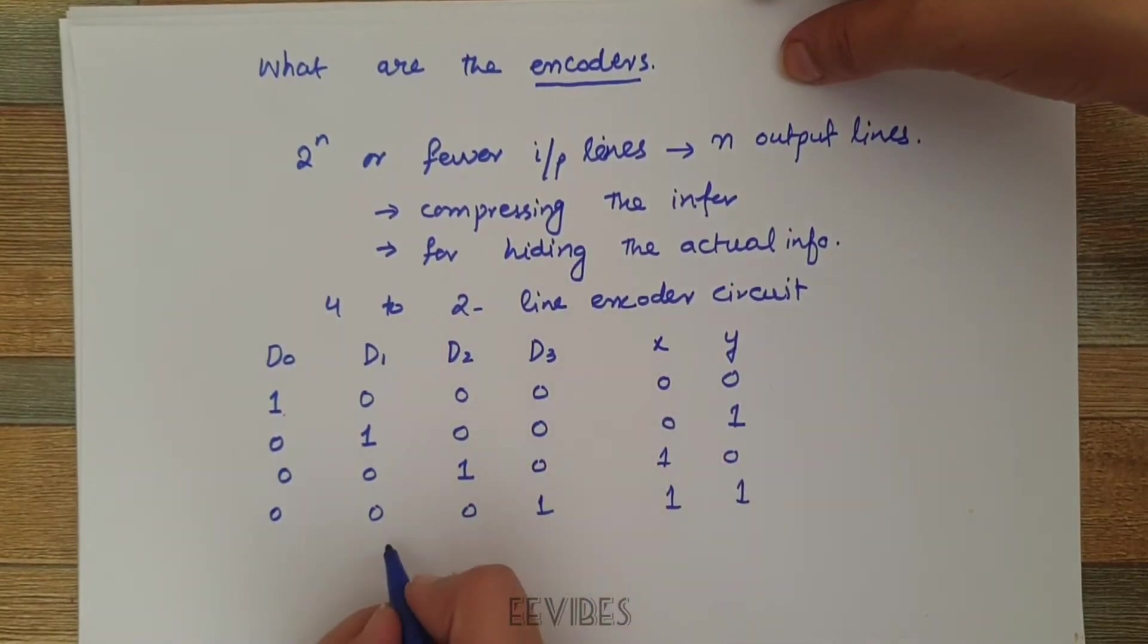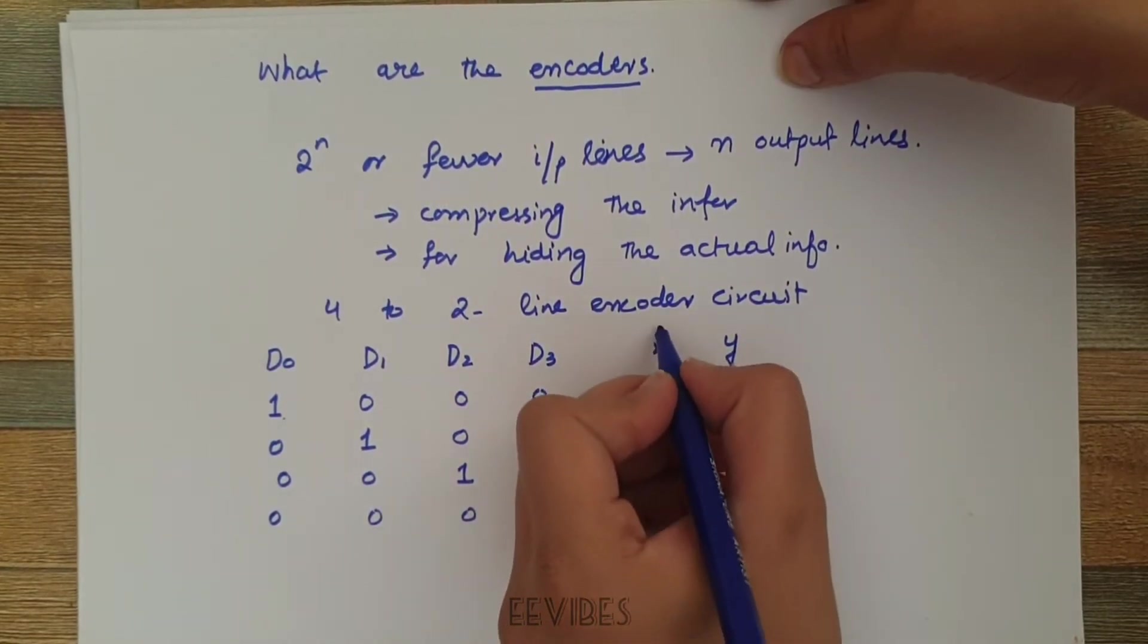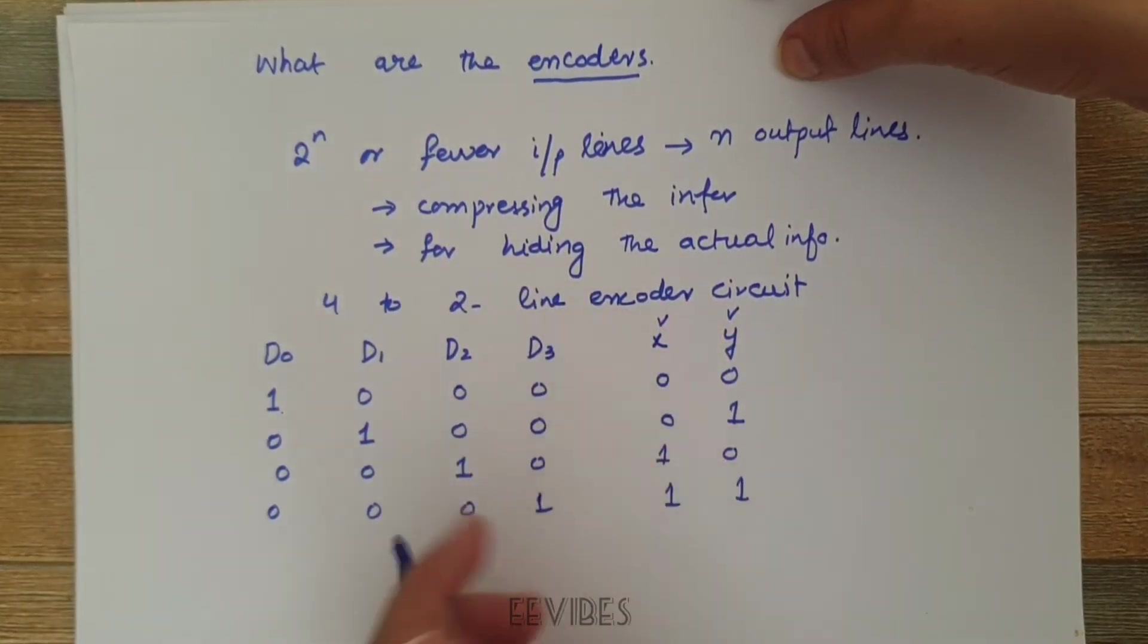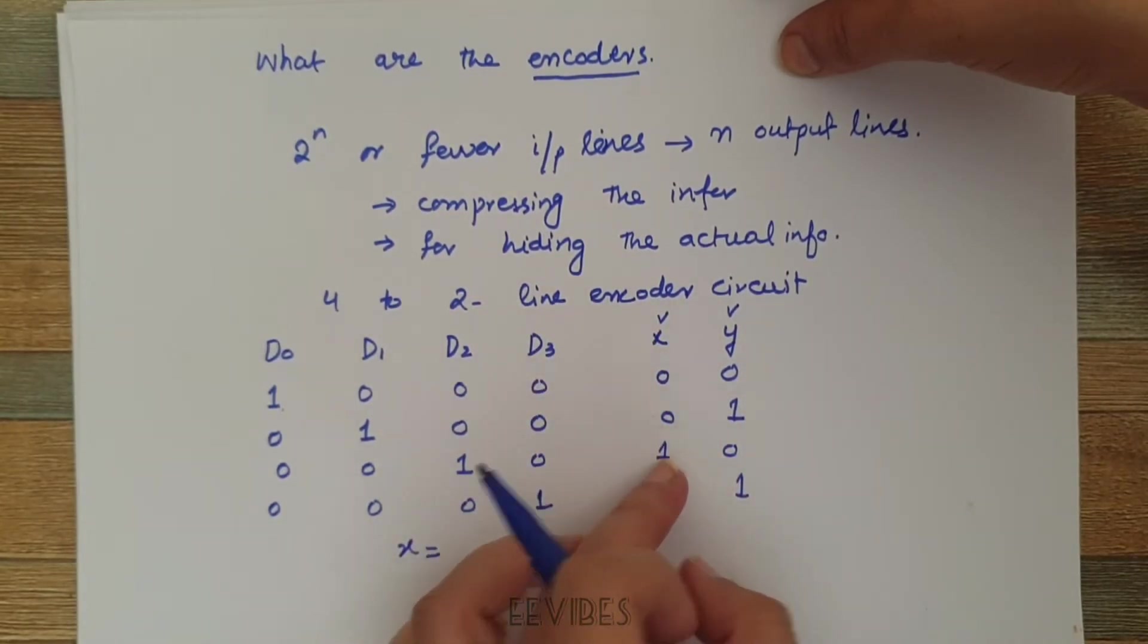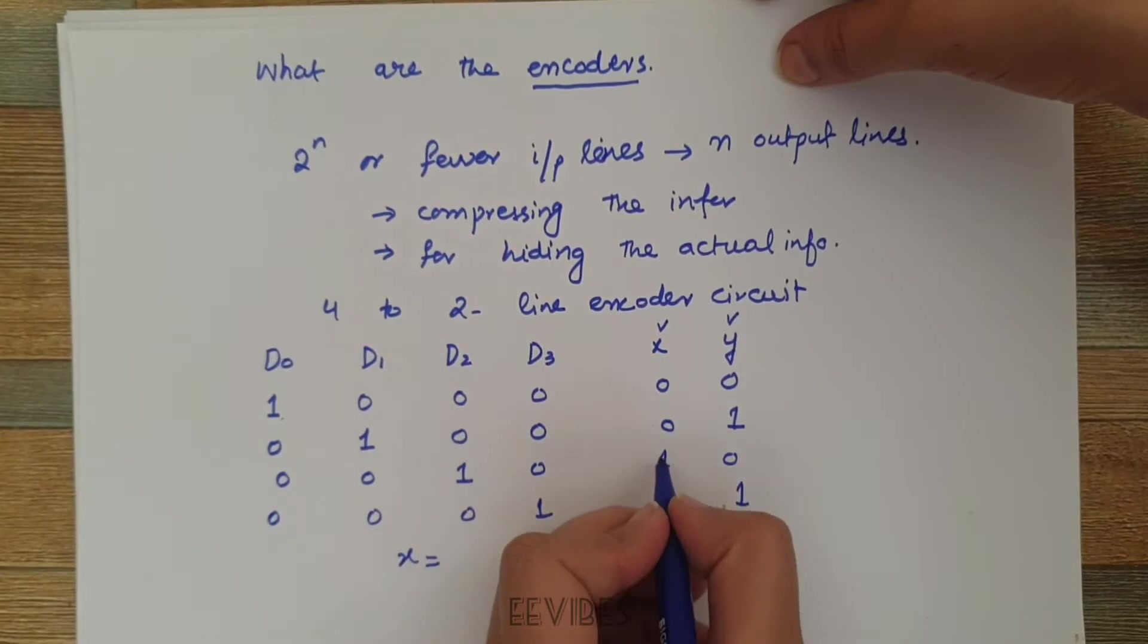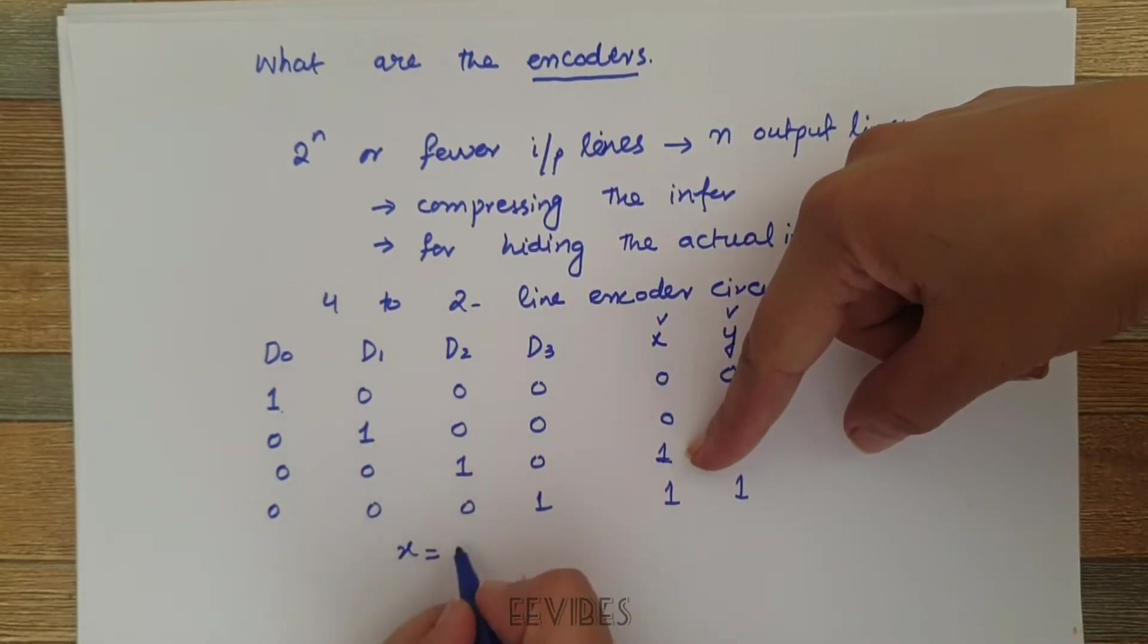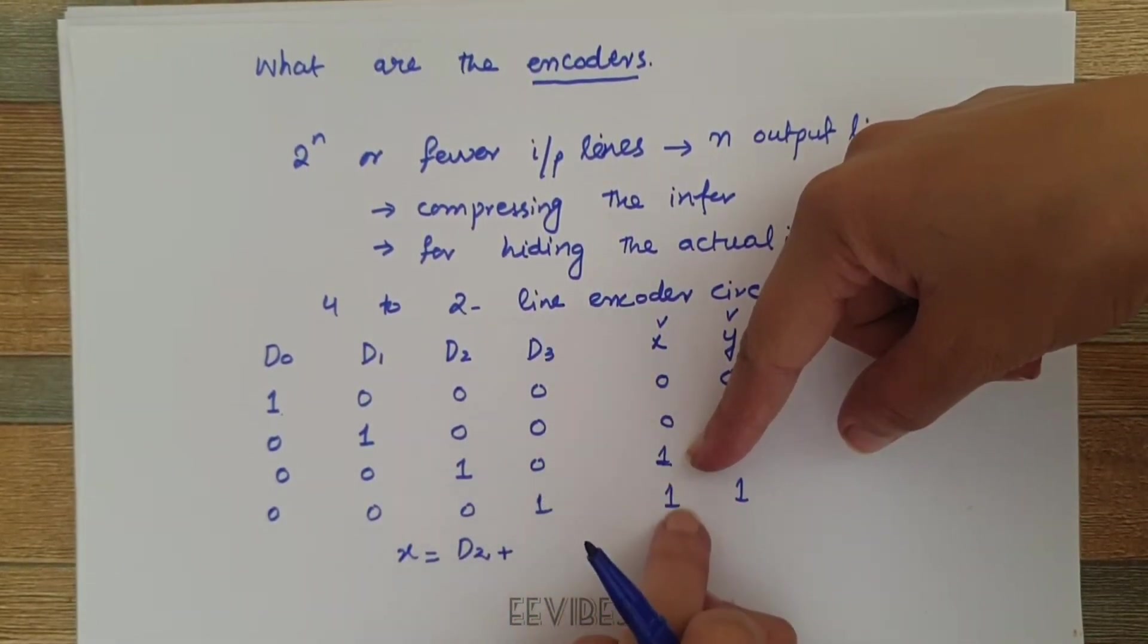If you write down the function of the encoder circuit then you have two outputs x and y. If we treat x as an individual output function we can write it as a summation of D2 and D3, because x is equal to 1 when only D2 is equal to 1, and x is equal to 1.